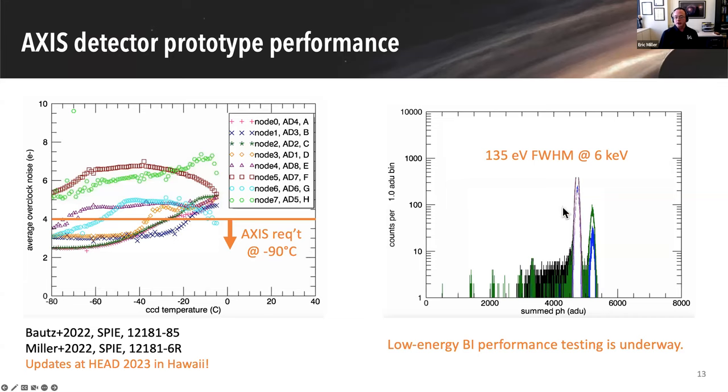Over here, this is showing the response, meaning how well we can measure the energy, to photons at about six keV. We're getting 135 EV full width half max, which is well below our requirement for Axis. Now, I did a bit of a bait and switch because the first half of this talk, I talked all about the low energy response and how important that is. That testing is underway right now in our lab. So I don't have any results to show from that. But stay tuned, especially if you're going to be at the head meeting in Hawaii. We hope to have some new results that we'll show there.